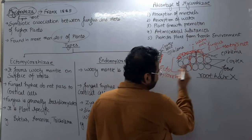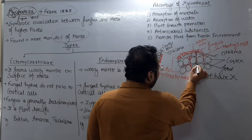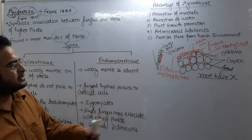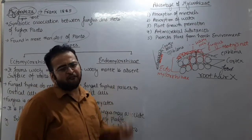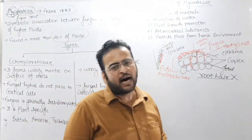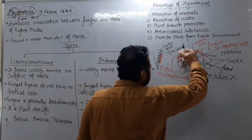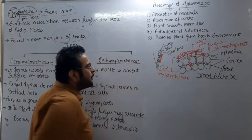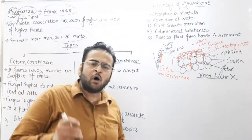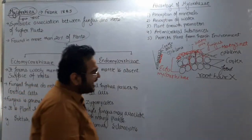Aur fungus ko kya fayda hua? Plant ke cells ne food ko intercellular spaces mein daal diya for the fungus. To dono ko ek doosre se fayda mil raha hai. Kyunki is mein fungus ka zyada hissa bahar ki taraf hai, to yeh kehlayegi ectomycorrhiza.